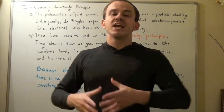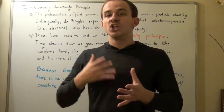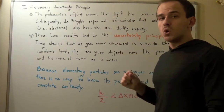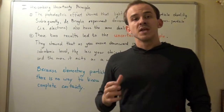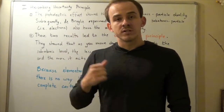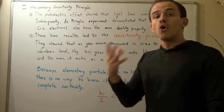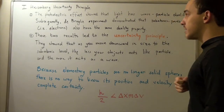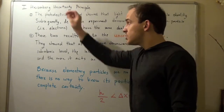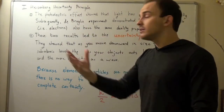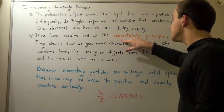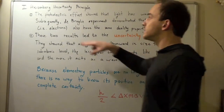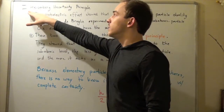Following this experiment, another experiment was conducted, known as the de Broglie experiment. What that experiment showed was that not only light has this property, but other subatomic particles, like electrons, also have this wave-particle duality property. These two experiments led directly to the uncertainty principle, or the Heisenberg Uncertainty Principle, named after the guy who came up with the principle, Heisenberg.